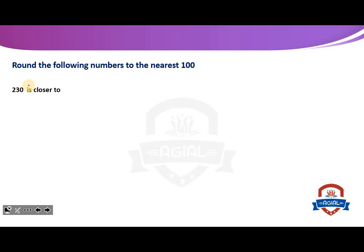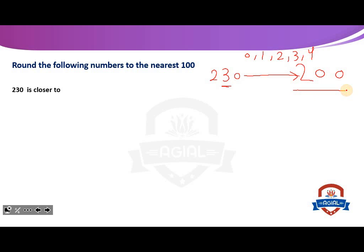Round the following number to the nearest 100. 230 is closer to what? If we have 230 and need to round it to the nearest 100, first we keep the ones place as 0 and look at the tens place. If the tens place is 0, 1, 2, 3, or 4, we convert the tens place to 0 and keep the hundreds as it is. So the number here will be 200 — 230 is closer to 200.